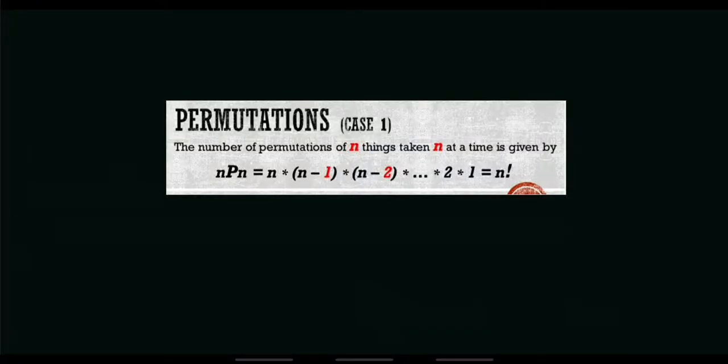Hi, good day everyone. This video is about permutations, case number 1. According to its definition, permutation is an arrangement of things in a definite order, or the ordered arrangement of distinguishable objects without allowing repetitions among the objects. So, the number of permutations of n things taken n at a time is given by n times n-1 times n-2 up to times 1, or simply equals to n factorial.